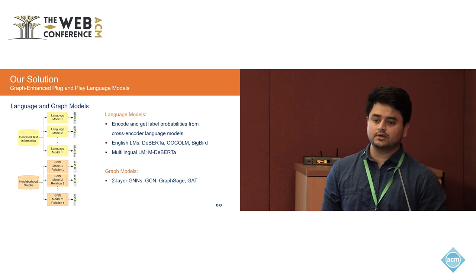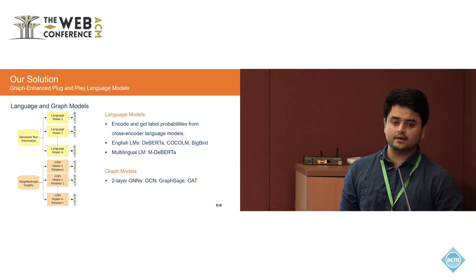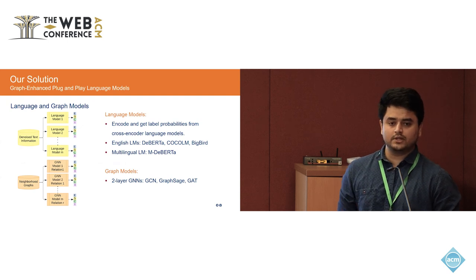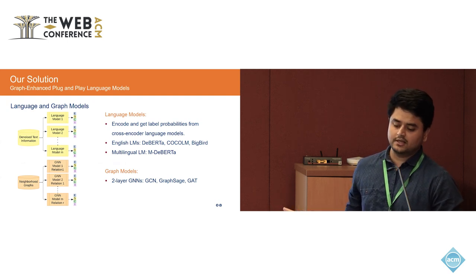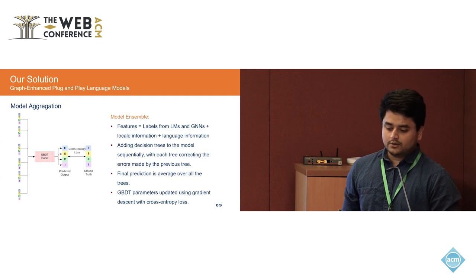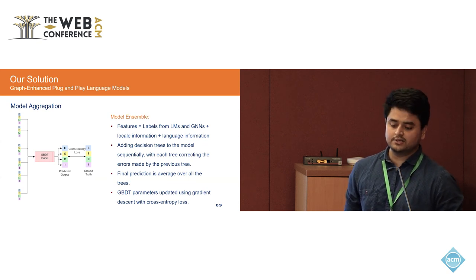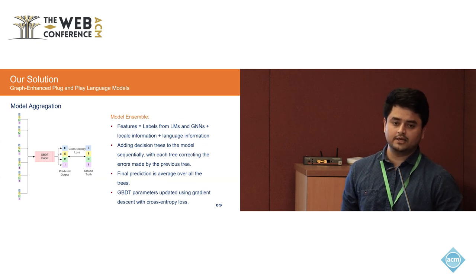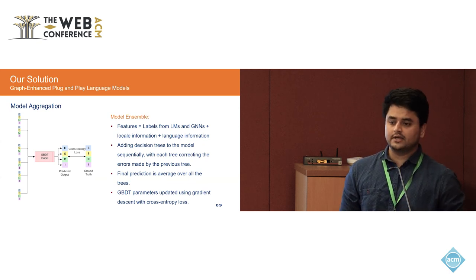Our solution was a graph and language model-based plug-and-play architecture. We use multiple language models on our text information to get ESCI classification probabilities, and multiple GNNs on graph information to also get ESCI probabilities. To aggregate them, we use a GBDT model on top — we experimented with MLP and attention mechanisms, but GBDT performed best. This allows parallel machines running LM models and graph models separately, with a final aggregator machine combining all outputs for ESCI classification.